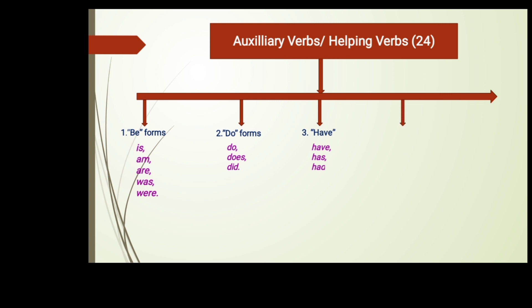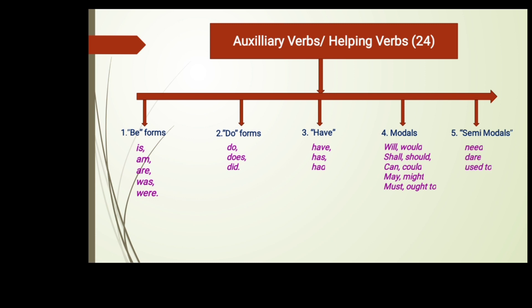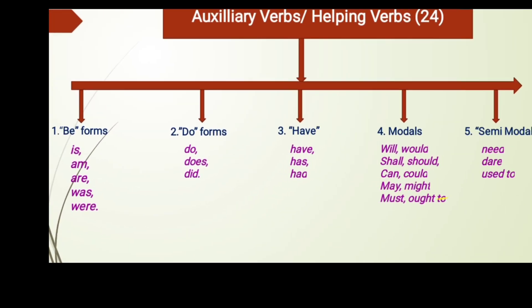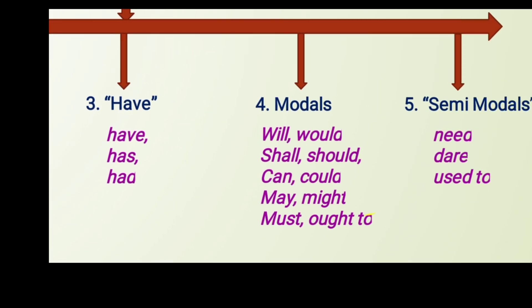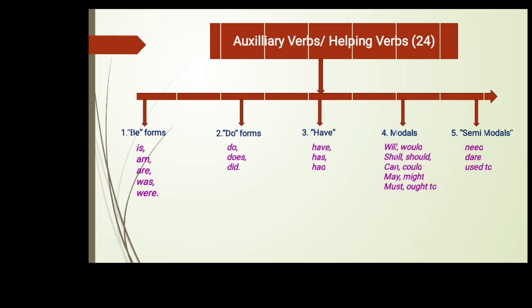The fourth classification is modals — they are ten in number: will, would, shall, should, can, could, may, might, must, and ought to. The fifth classification is semi-modals — they are three: need, dare, and used to. So among these 24 helping verbs, modals and semi-modals together — both are called modal verbs in English.